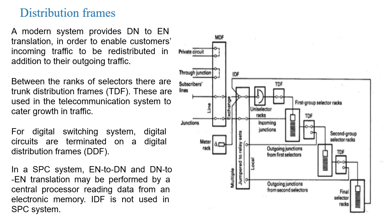Between the ranks of selectors there are trunk distribution frames (TDF). These are used in the telecommunication system to cater for growth in traffic. For a digital switching system, digital circuits are terminated on a digital distribution frame (DDF). In an SPC system, N to DN and DN to N translation may be performed by a central processor reading data from an electronic memory, and IDF is not used in SPC systems.